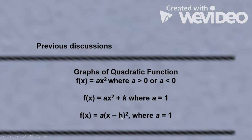In the third part of our video lesson, we discussed the form a(x - h)². The value of h determines the translation of the parabola either to the right or to the left. The parabola moves h units to the right if h is positive, and h units to the left if h is negative.